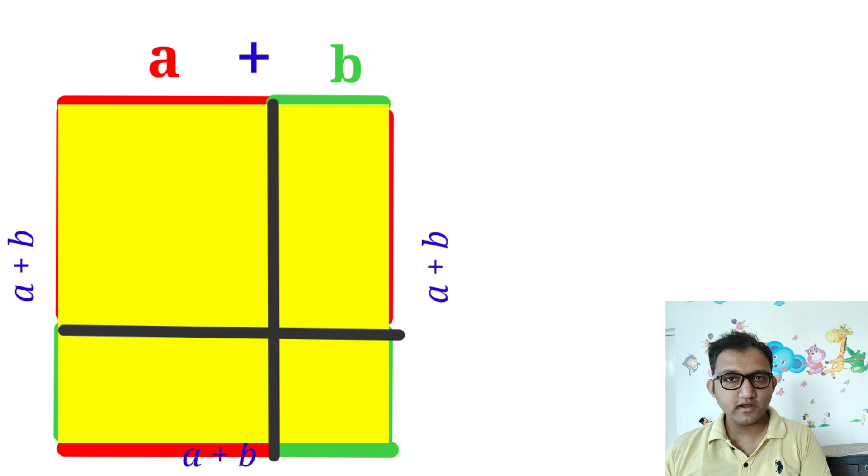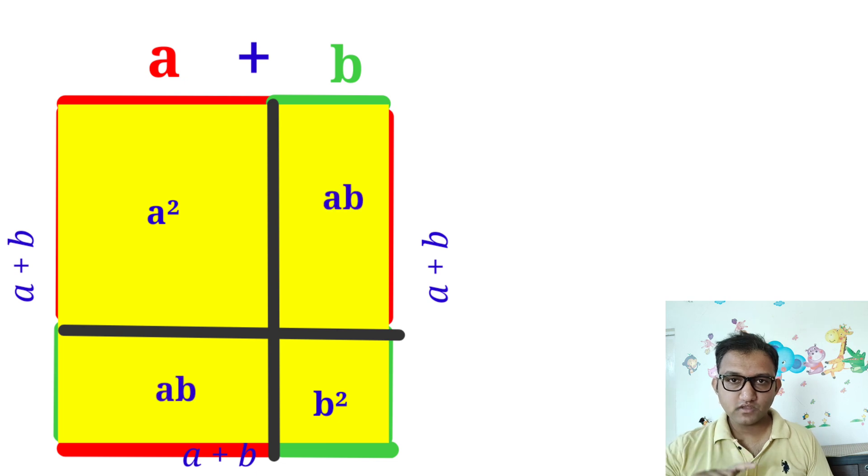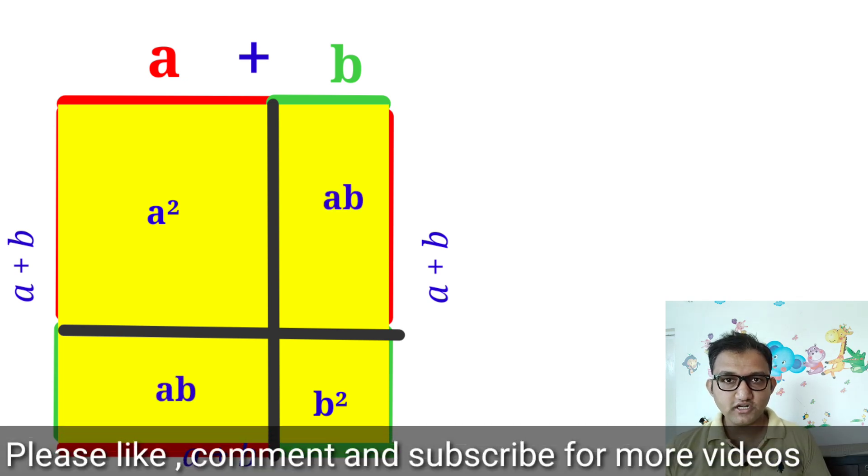Observe this square carefully. As you can see, you are getting two squares here: a² and b². You are also getting two rectangles, a × b and a × b, so totally we are getting 2ab.